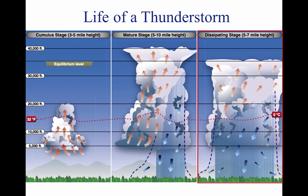At this point, the storm enters the dissipating stage. This is when the downdrafts spread out and replace the updrafts needed to sustain the storm. It is impossible to fly over thunderstorms in light aircraft. Severe thunderstorms can punch through the tropopause and reach staggering heights of 50,000 to 60,000 feet depending on latitude.